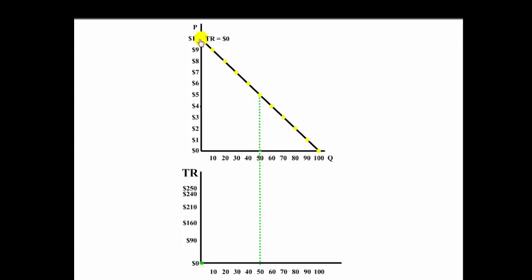Yet if the price goes down to $9, 10 units will be purchased in the marketplace. Notice that 9 times 10 is 90, and on the graph down below it shows that total revenue is going up.